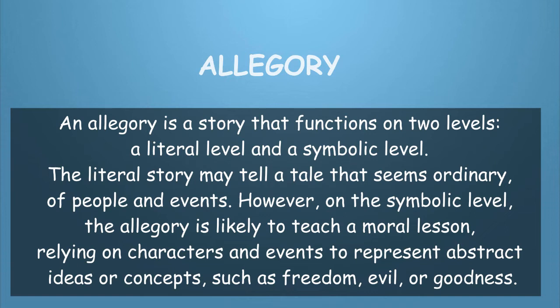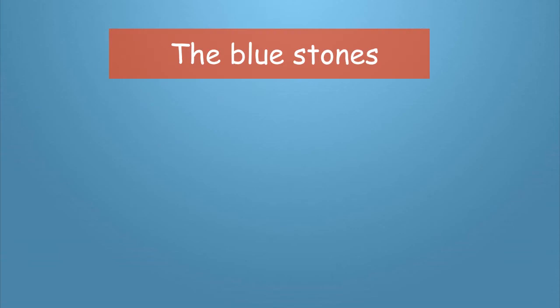بمعنى أن الأليغوري هي قصة مكتوبة على مستويين: المستوى الأول هو المستوى الأدبي، يعني أن الكاتب يكتب قصة فيها شخصيات وأحداث. أما المستوى الثاني فهو المستوى الرمزي، والمستوى الرمزي يعلمنا درساً في الأخلاق. وكمثال على ذلك، سنأخذ قصة 'Babette's Blue Stones' بقلم Isak Dinesen.